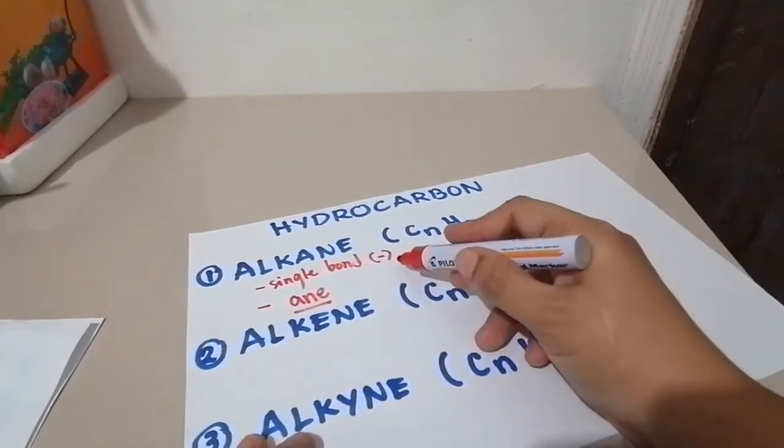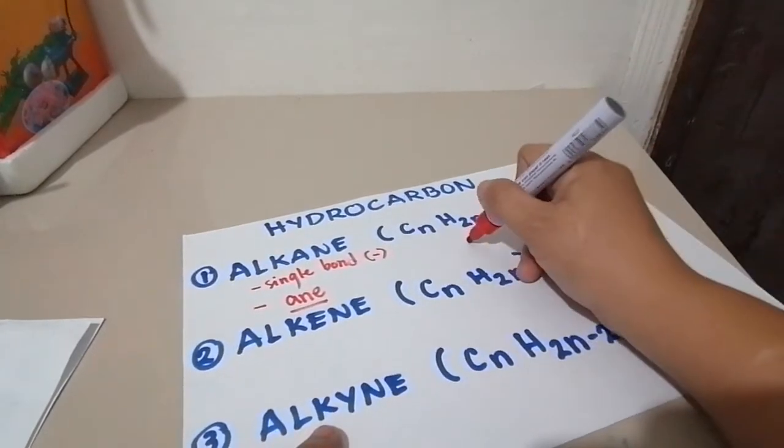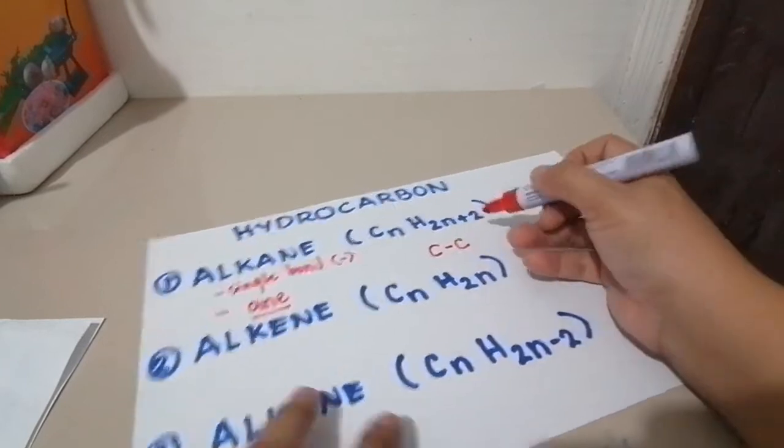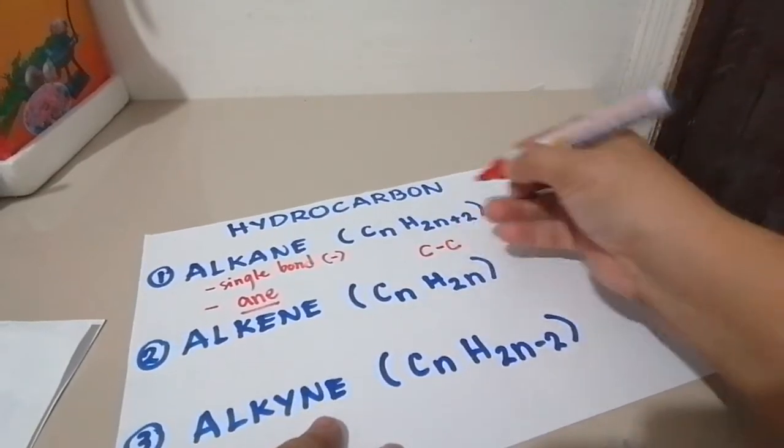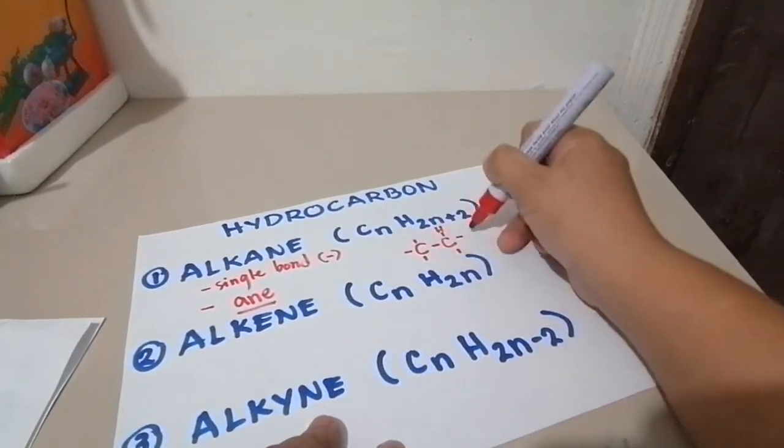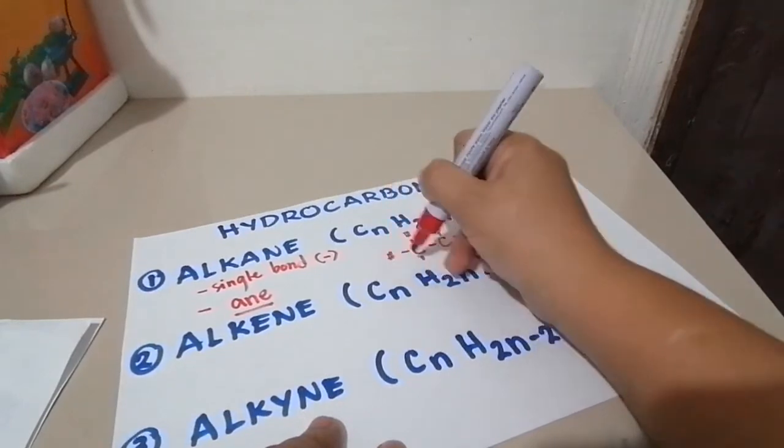When it bonds with other carbons, single bond. Just like here, the C and C here, you'll see their bond is single bond, and the others here outside are all H, that's the hydrogen.